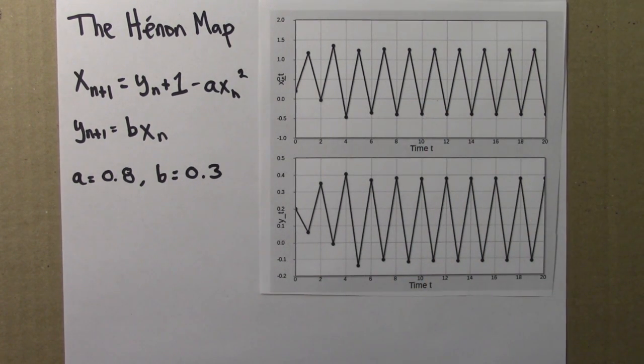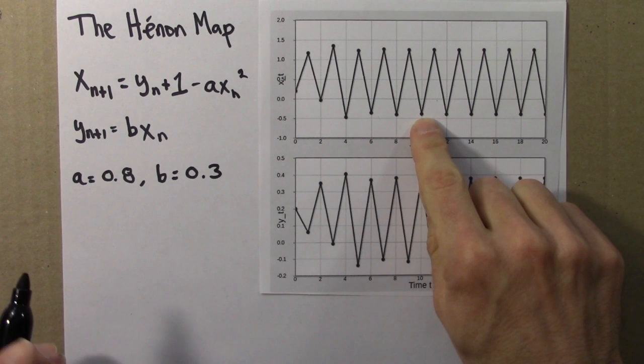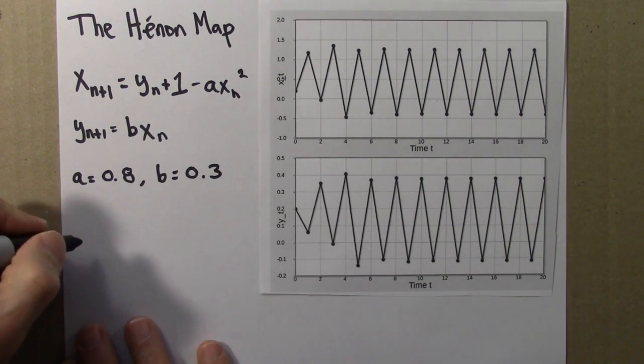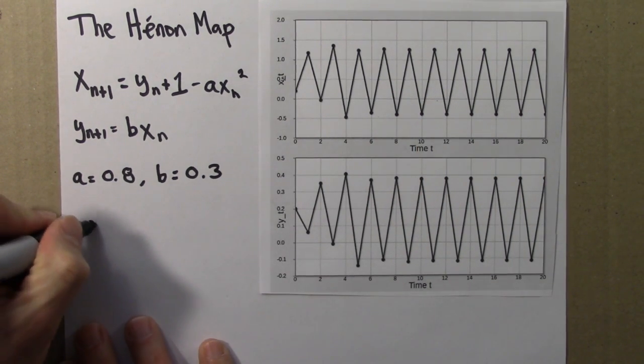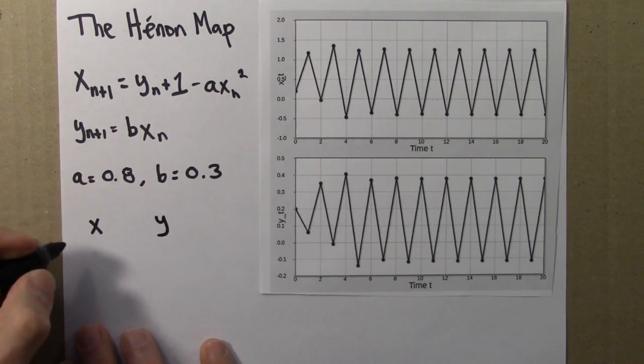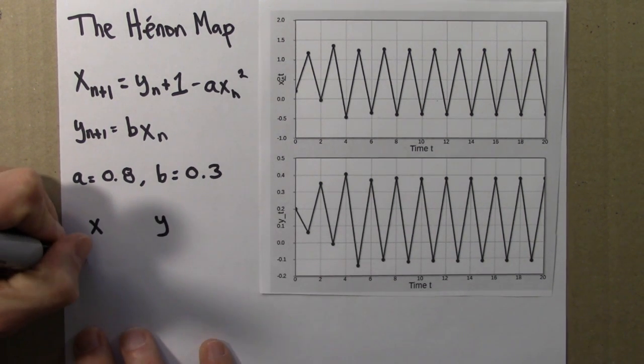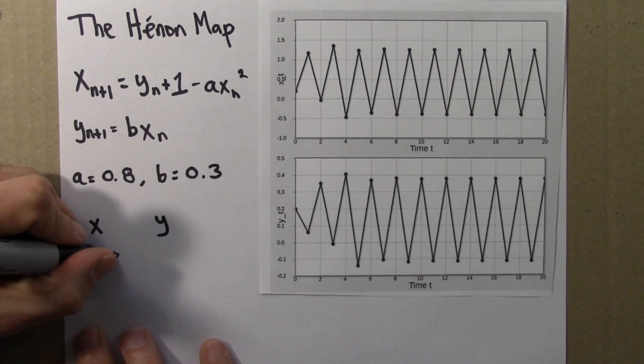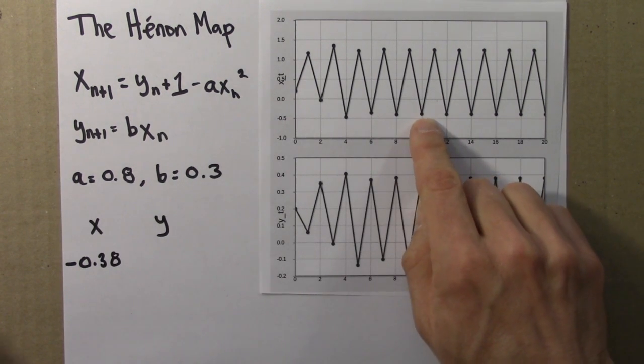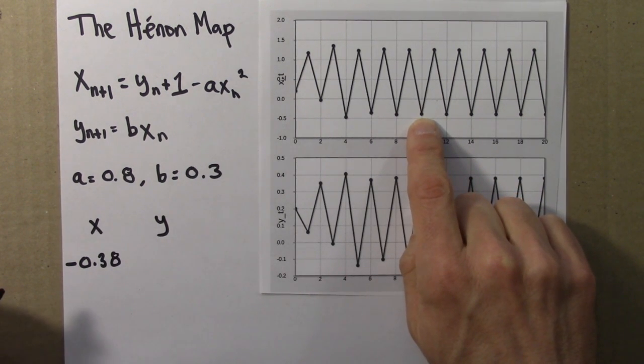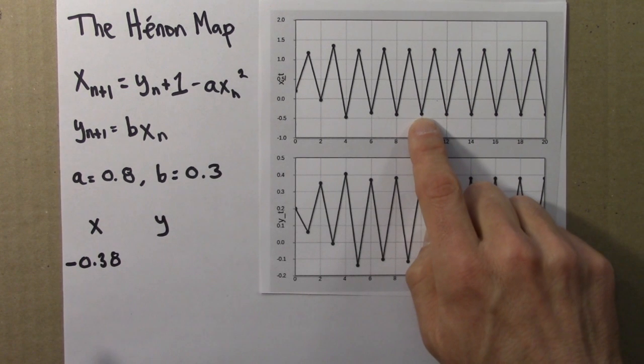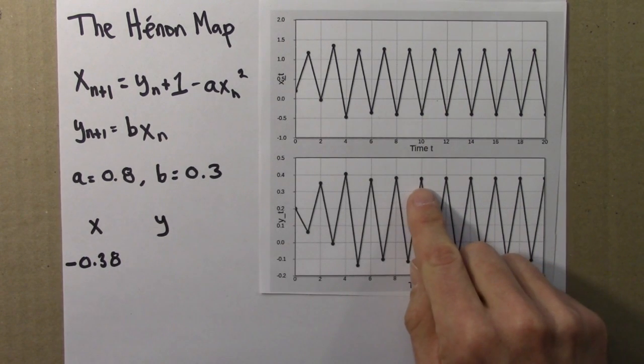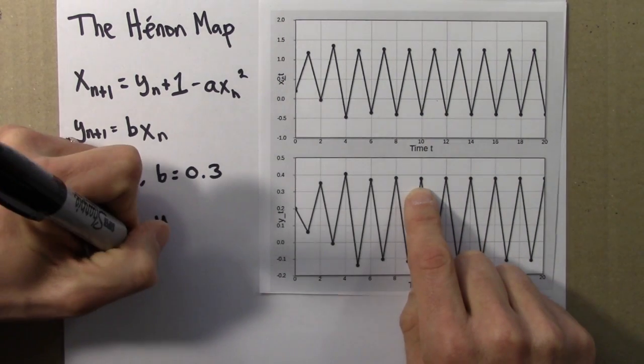If one looked closely at the numbers, one would find that it's oscillating between these two points. So we have, I'll write this like this, an x of about minus 0.38, so that's this value here, and when x is minus 0.38, it turns out that y is about plus 0.38.